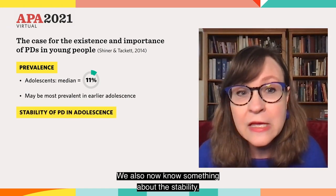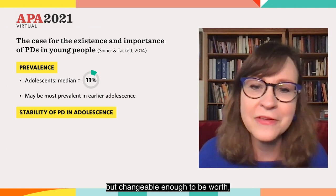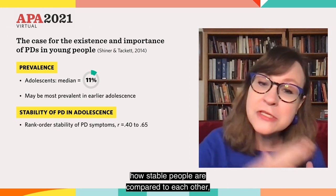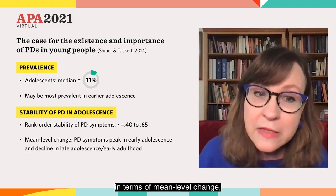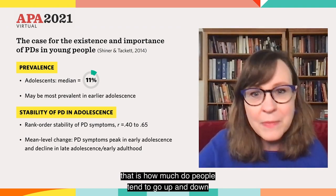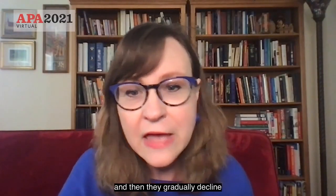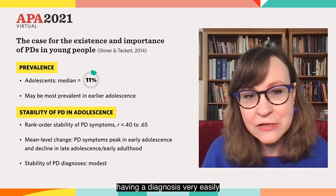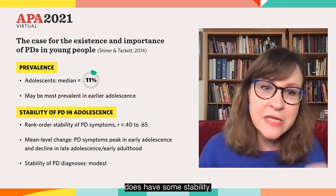We also now know something about the stability — enough to know that personality disorder conditions are stable enough to be worth treating, but changeable enough to be optimistic about making changes. In terms of rank order stability, the stability is moderate to strong in terms of symptoms. In terms of mean level change, the symptoms actually peak in early adolescence and then gradually decline through later adolescence into adulthood. The stability of diagnoses is actually quite low because people can move in and out of having a diagnosis very easily by just losing or gaining a symptom or two. But the underlying condition itself does have some stability.